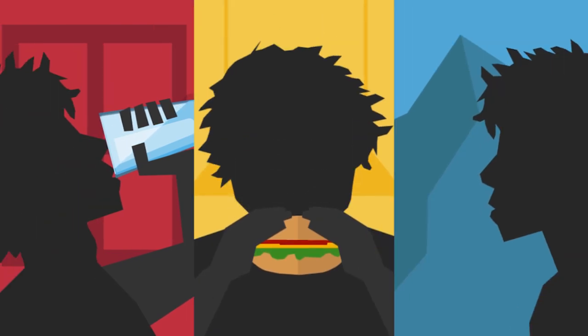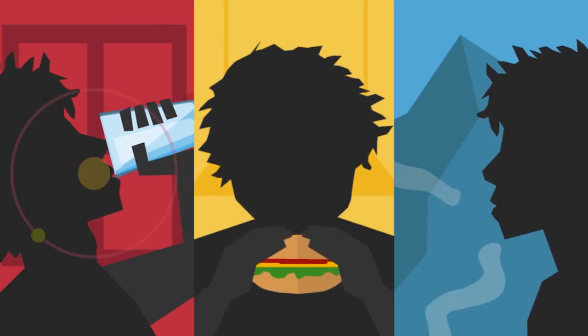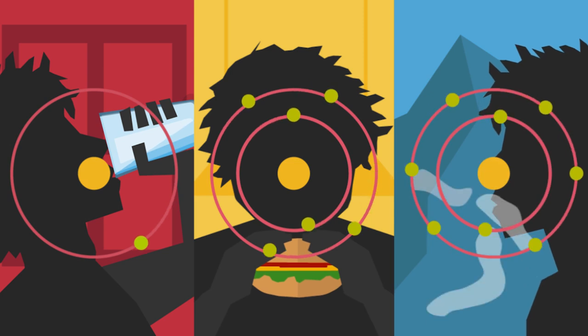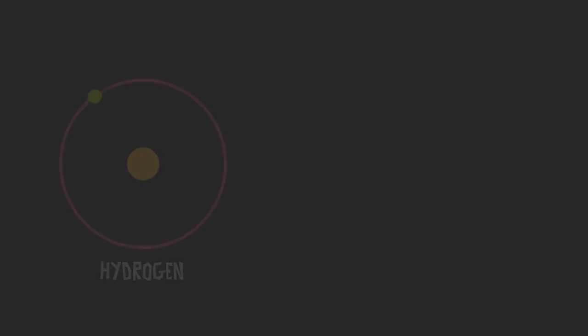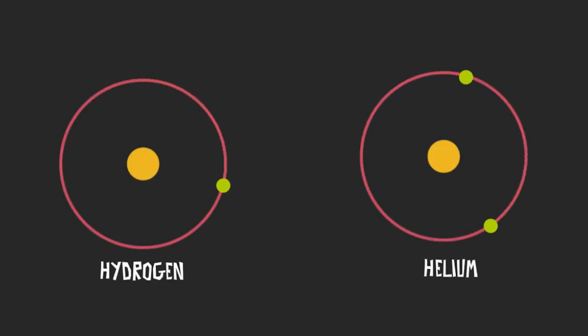Life needs a lot of different kinds of atoms to exist, like hydrogen, carbon, and oxygen. But when the universe began, there was only hydrogen and helium, the very simplest atoms of all, and nothing else. Where did the others come from then?